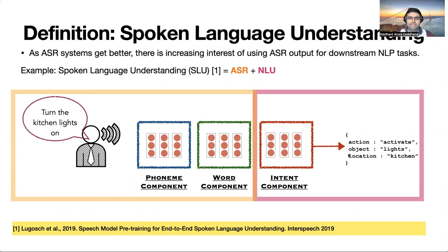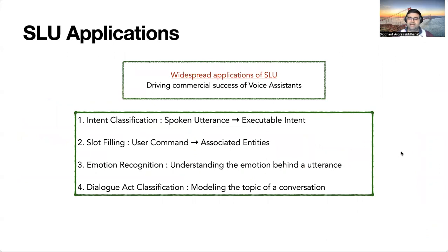As automatic speech recognition systems are getting better, there's an increasing interest in using the ASR output to do downstream natural language processing tasks. Spoken language understanding is the task of inferring the semantic meaning of spoken utterances. It consists of two subtasks: the first converts speech representations to word representations, and the second extracts the intent of the spoken utterance. Spoken language understanding is an essential component of many daily applications like voice systems, social bots, and intelligent home devices.